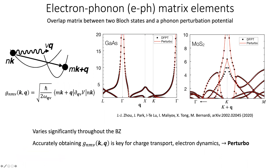The electron-phonon matrix elements are the overlap matrix between two Bloch states and a phonon perturbation potential. Looking at the schematic, there is an initial electron with index n and momentum k. It scatters off to a different Bloch state with index m and momentum k+q by emitting or absorbing a phonon with mode index ν and momentum q. The amplitude of this is denoted with g, shown on the right. Plotting these matrix elements throughout the Brillouin zone gives graphs for gallium arsenide and MoS2.